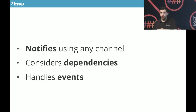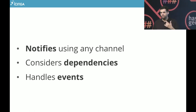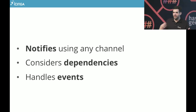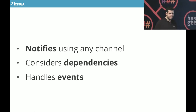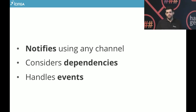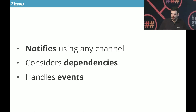We notify using nearly every channel. Default is email, which is the easiest. Text message is popular. The safest alert is calling somebody — doing a voice call, doing text-to-speech, reading the message, and forcing them to press 2 to acknowledge, because text messages can sometimes take a while to reach the destination. Voice calls are the hardest to set up normally, but the best way to alert somebody. We consider dependencies between servers, and we handle events — event handlers — so if a web server goes down, we can restart it by executing a script.